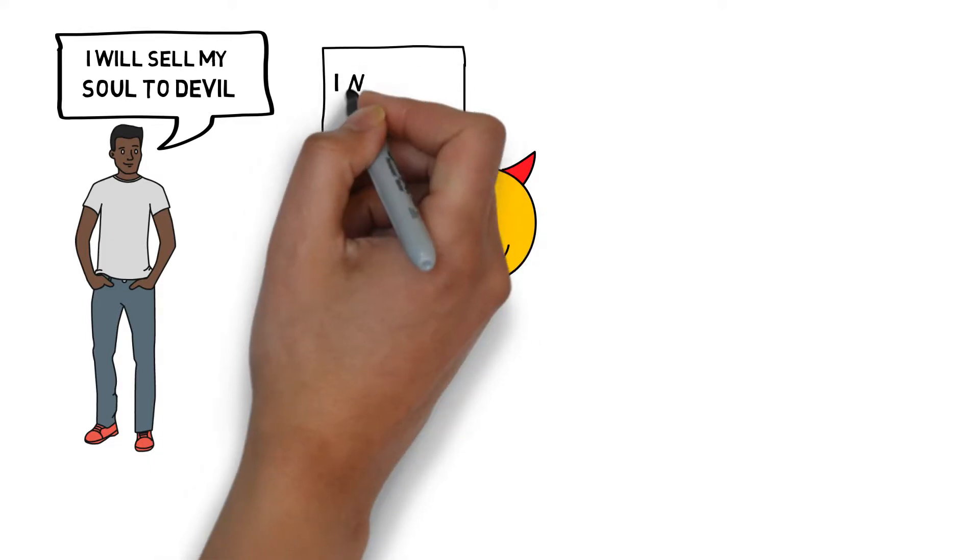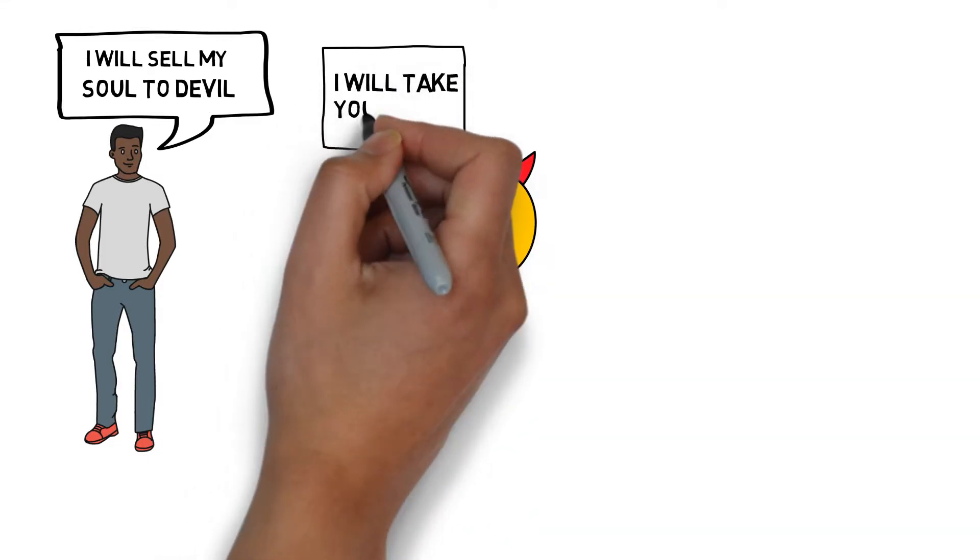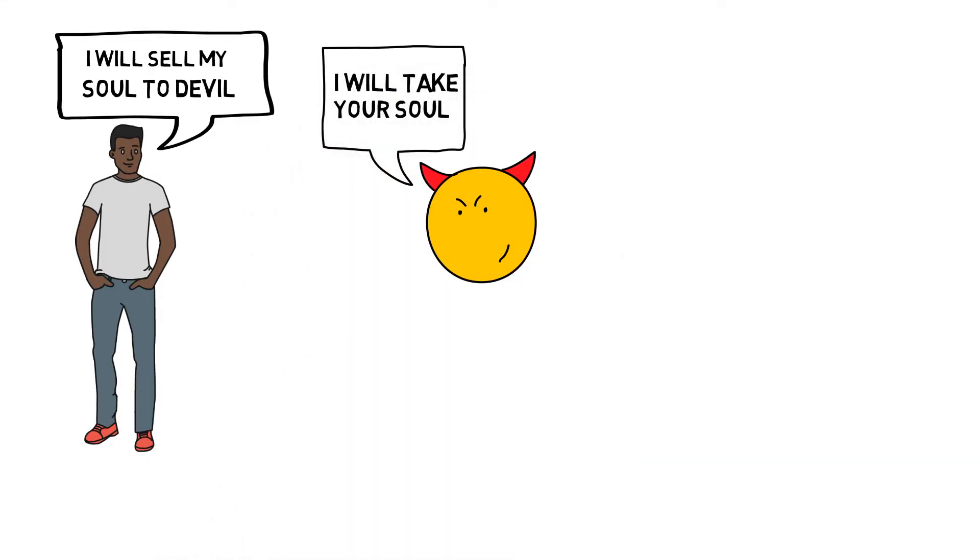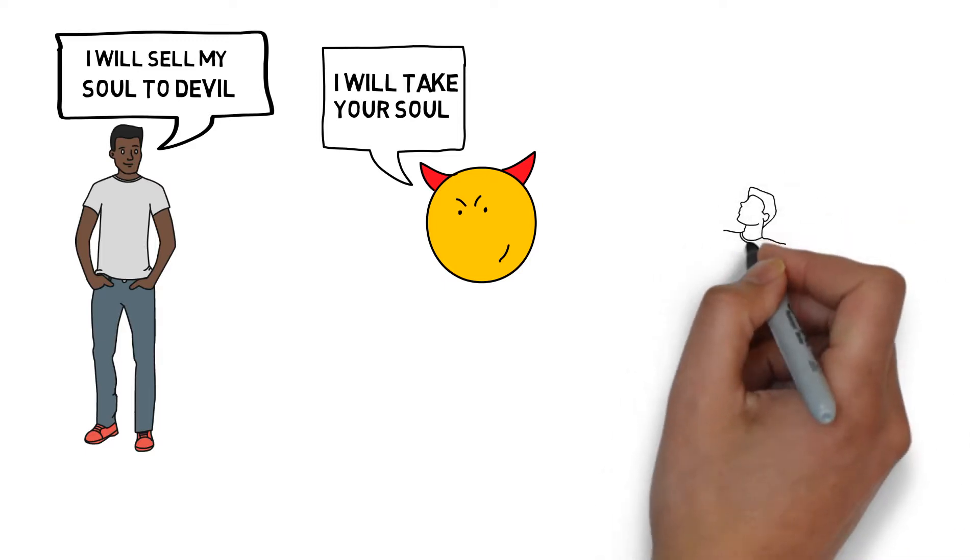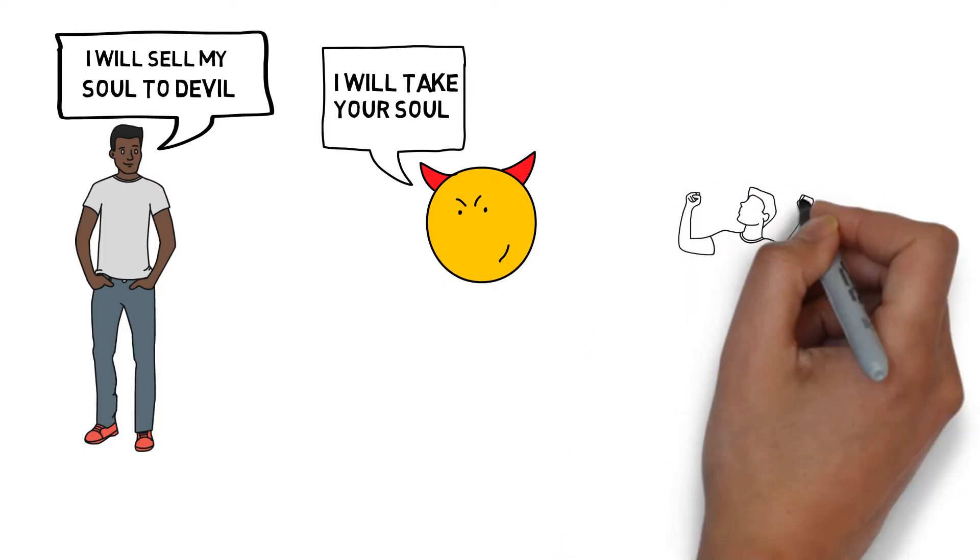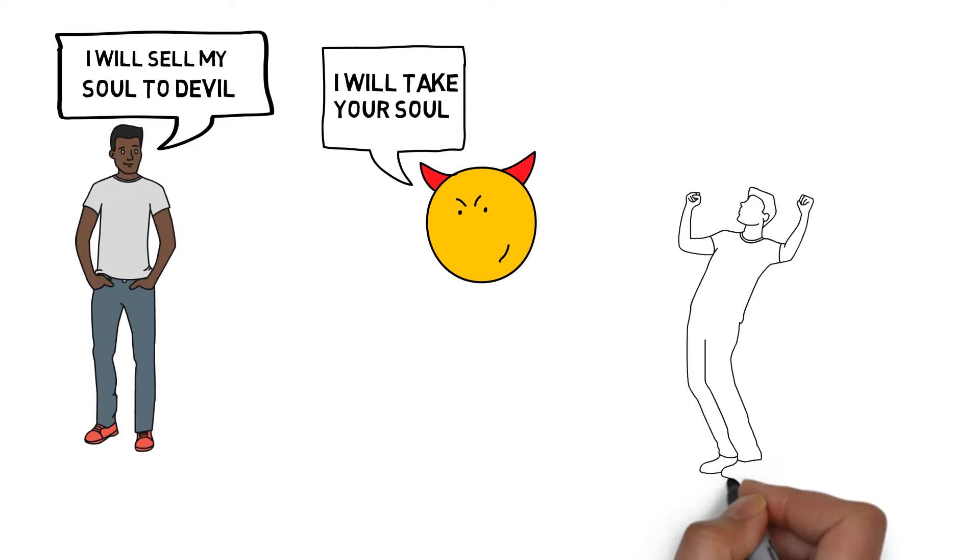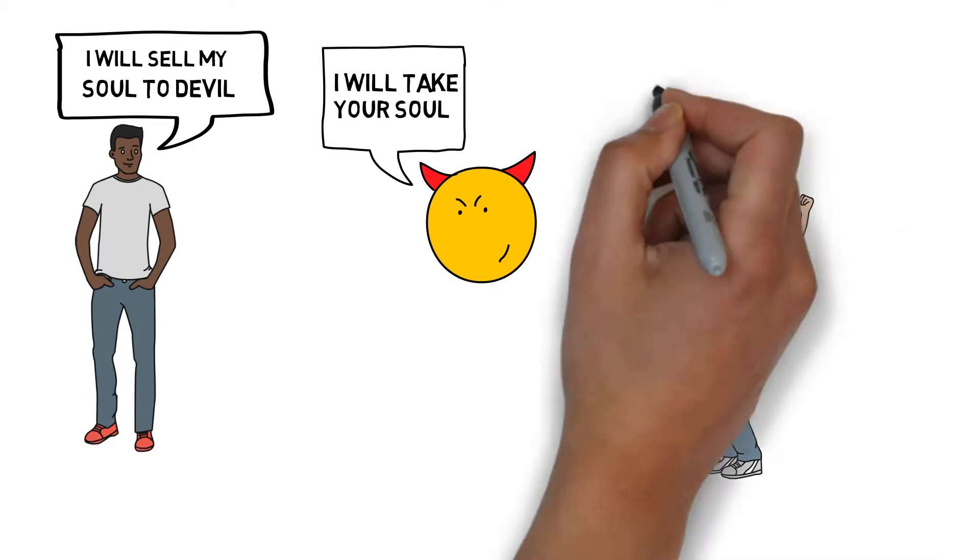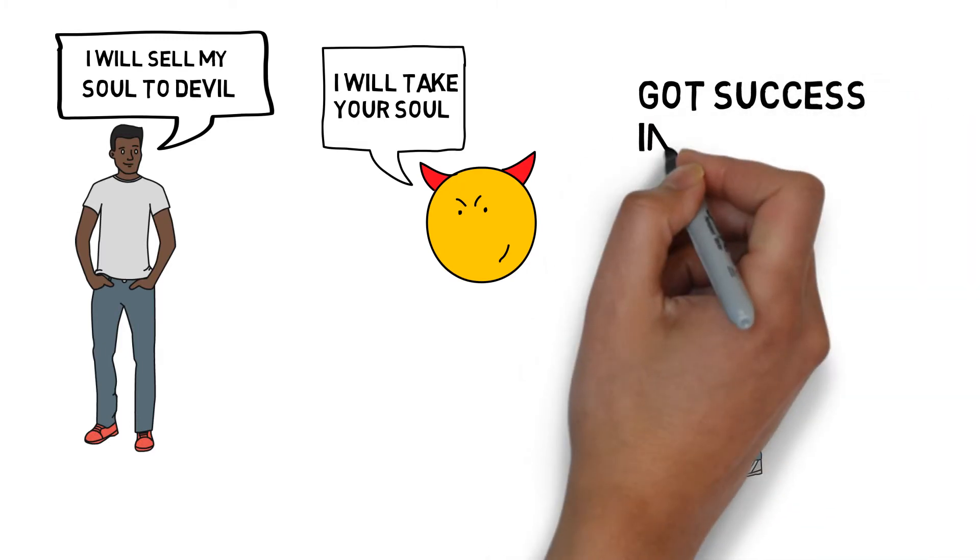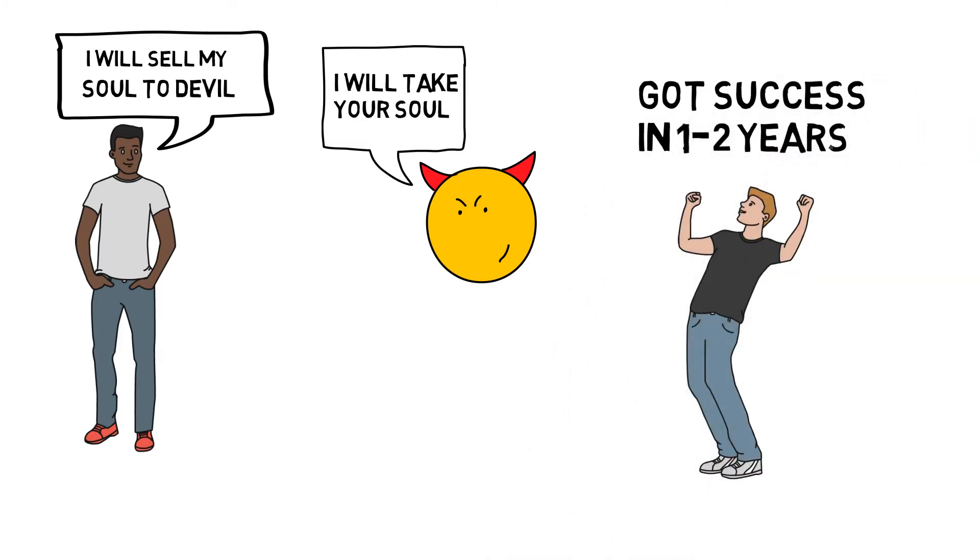Experts believe that all the bad things that are happening all over the world, it is done by the order of Illuminati. People also believe that big celebrities who become popular in very short span of time, like in one to two years they become a big rapper or an actor, they all become because of Illuminati. They sold their soul to devil.